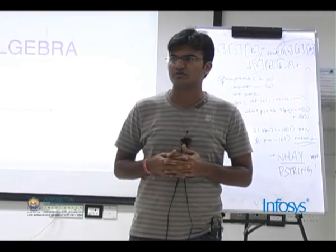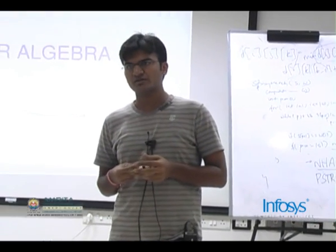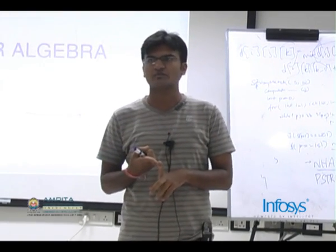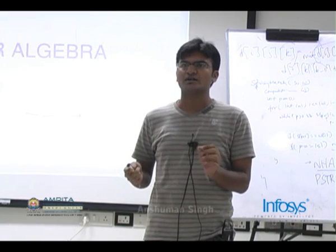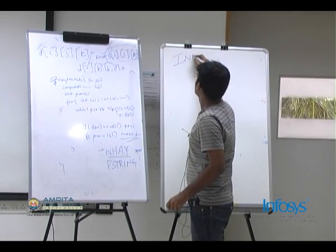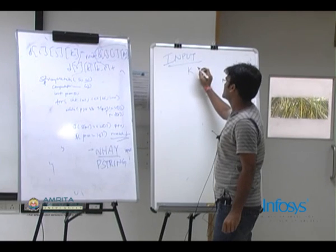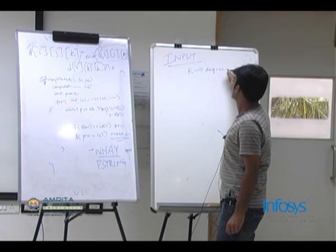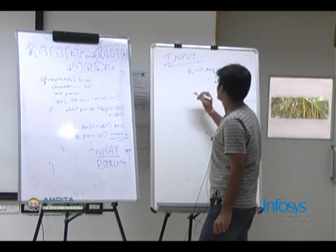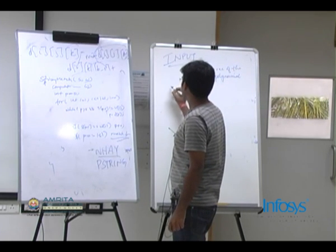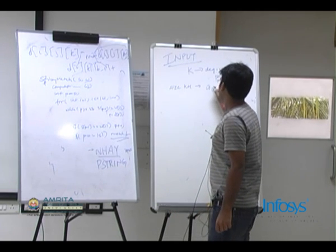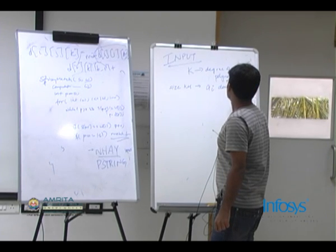Find all integer roots of a polynomial. You are given a polynomial. The input format: first you are given K, which is the degree of the polynomial, and then you get a list of size K+1 where A_i denotes the coefficient.